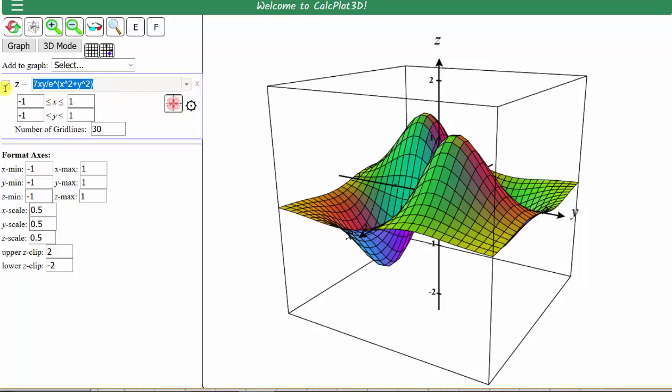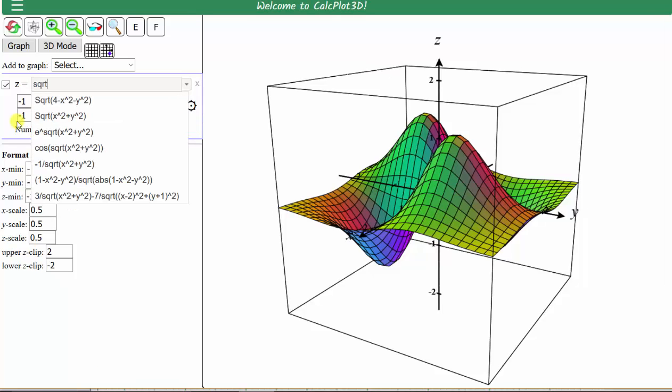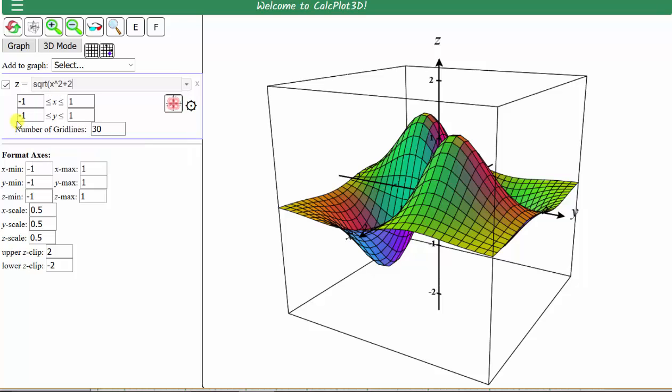The first step is to enter the function, which in our case is f of x comma y equals the square root of the quantity x squared plus two y squared. We enter sqrt for square root, open parenthesis, x to the second plus two times y to the second, close parenthesis, and graph or enter.